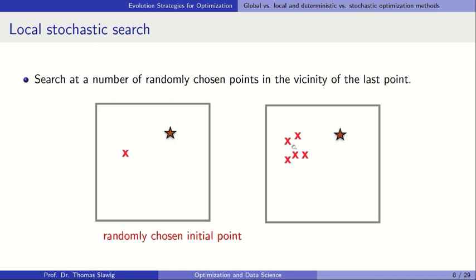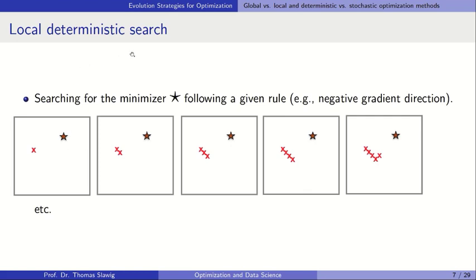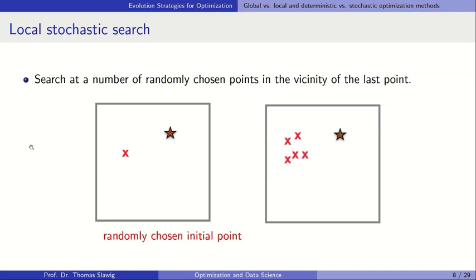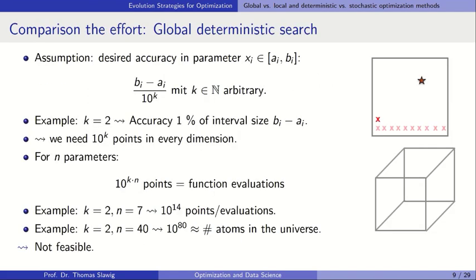We hope to come closer to the minimizer — this is a local deterministic search with nothing random inside. The local stochastic search also starts from some point but then chooses points randomly in the neighborhood. We put some points there, look at which is best, and then proceed. It is very interesting to see that a pure global search is not very promising because it simply requires too much effort.